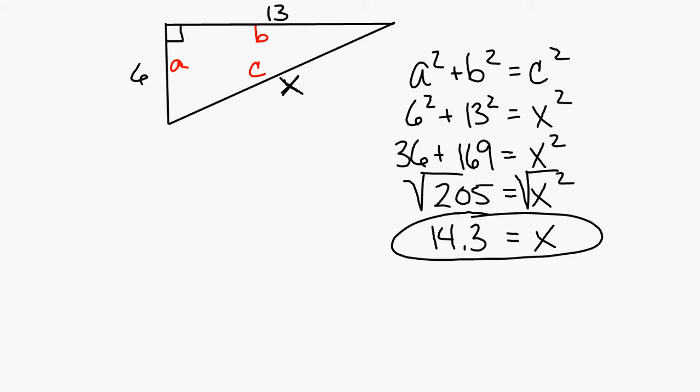If you see an answer like 3 times the square root of 29, and it appears as an answer choice on a multiple choice test, just convert it to a decimal. In your calculator, take 29, push square root, times 3, and hit equals. Note: the example in the book has this as a 15, and I wrote a 13, so we'll revisit that.